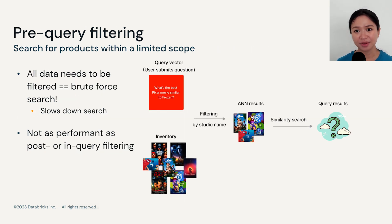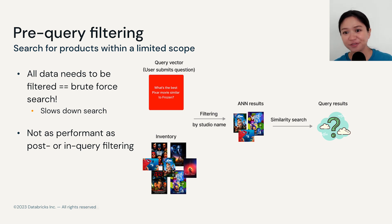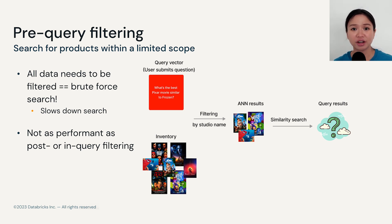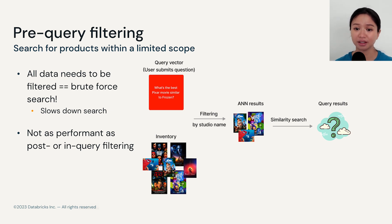The last type is pre-query filtering. This limits similarity search within a certain scope — so what vectors can I actually even consider after I apply the filter? The downside of this approach is that it doesn't leverage the speed of ANN, and all data would have to be filtered in a brute force manner. So this is often not as performant as the post-query method or the in-query filtering method, because the other two methods could easily leverage the speed of ANN.